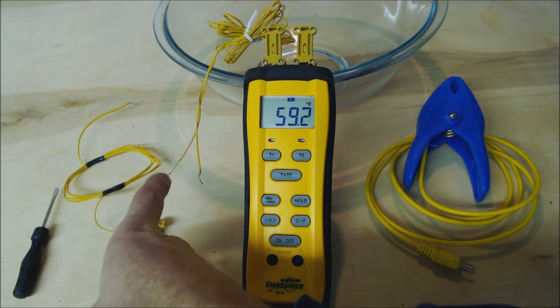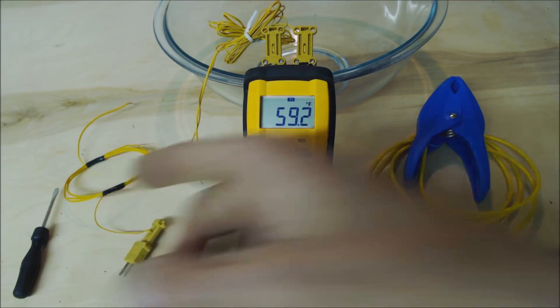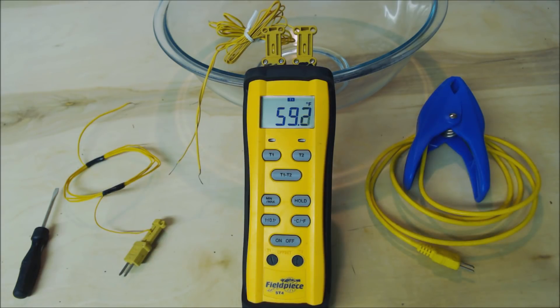We mount these on the suction and liquid line for superheat and subcooling measurements with our refrigerant gauges, and we also use the temperature meter for reading Delta T across the indoor evaporator coil for cooling. For conventional systems it's typically around 18 to 21 degree Delta T. We also use Delta T temperature measurements across the gas furnace or oil-fired furnace to take our temp rise.